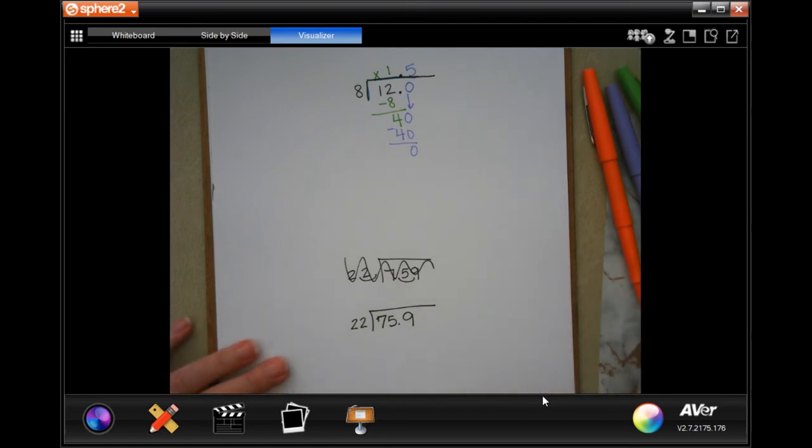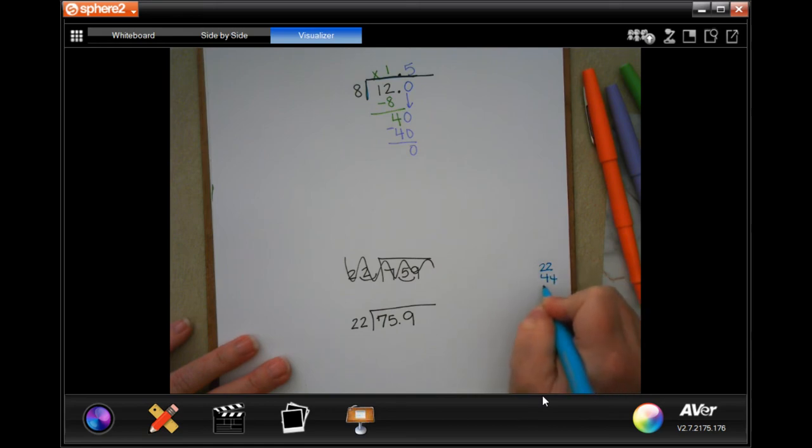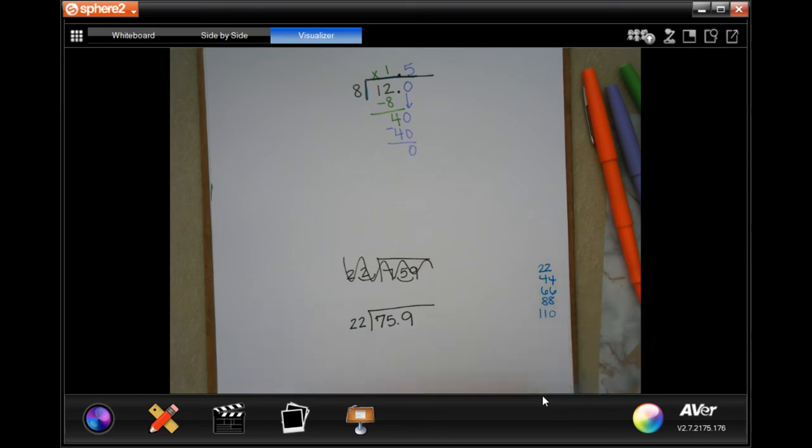So I know 22, I know 44, I know 66, I know 88, and 110. First thing, I'm going to move my decimal. Now that I don't have a decimal out there, I can just move it straight out.